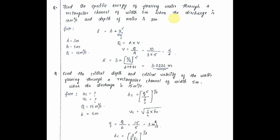So specific energy is given by E equals h plus v squared upon 2g, where h is equal to 3 meters, breadth is equal to 5 meters, and Q equals 10 cubic meters per second. Therefore, Q is equal to A into v, so v equals Q by A.